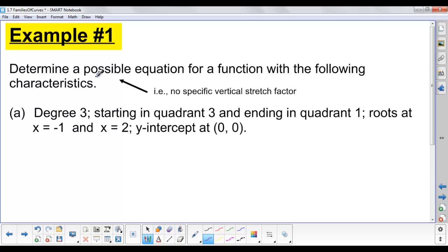Example 1 says determine a possible equation for a function with the following characteristics. When I say possible, I mean no specific vertical stretch factor. Part (a): Degree 3, starting in quadrant 3 and ending in quadrant 1. This information tells us the end behavior of our function.